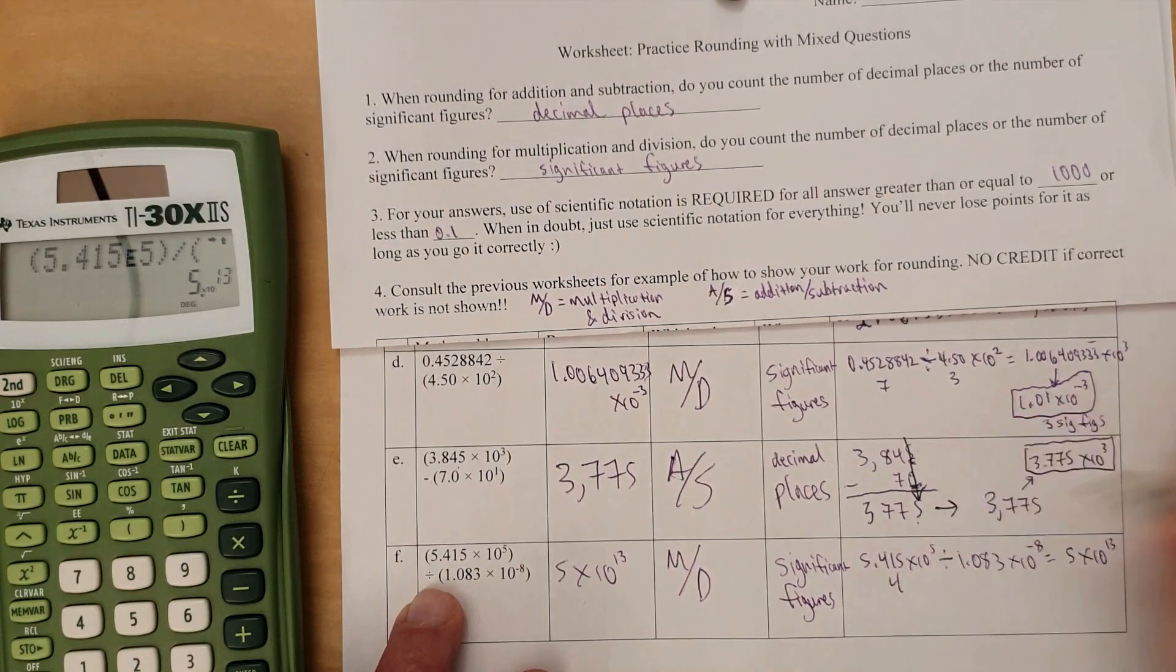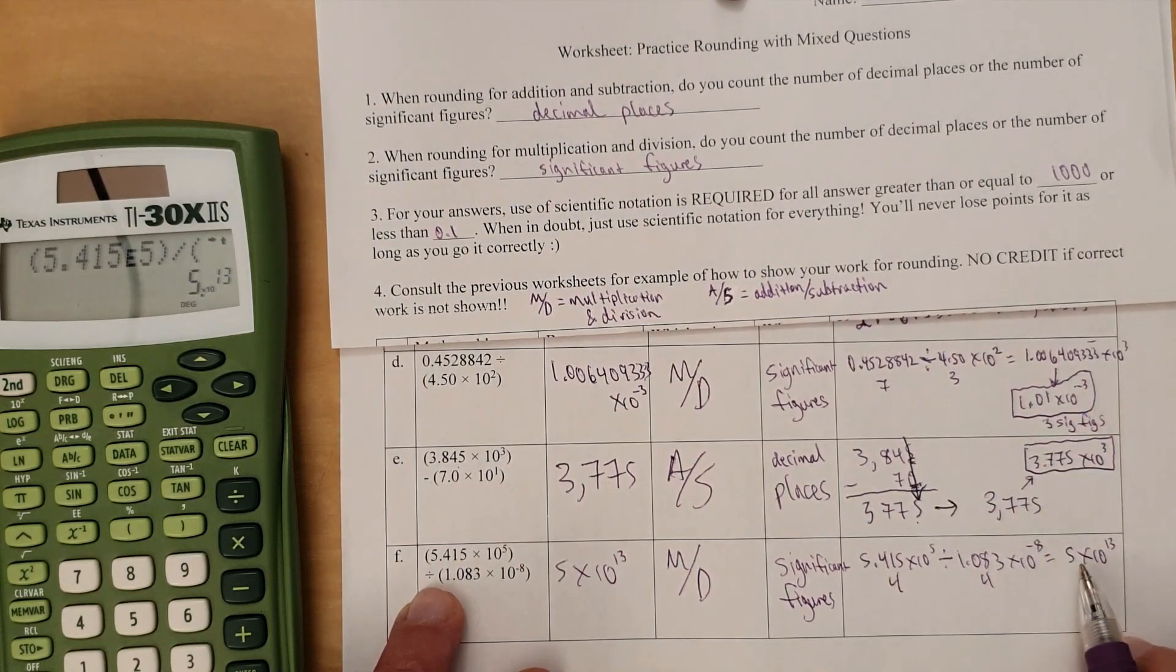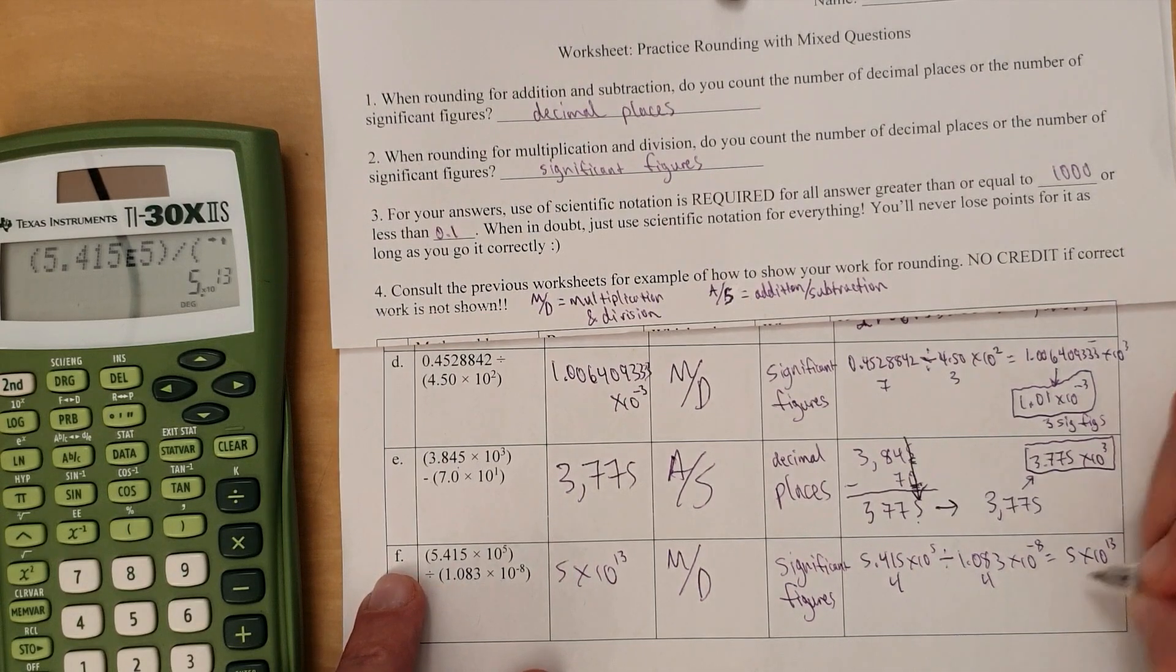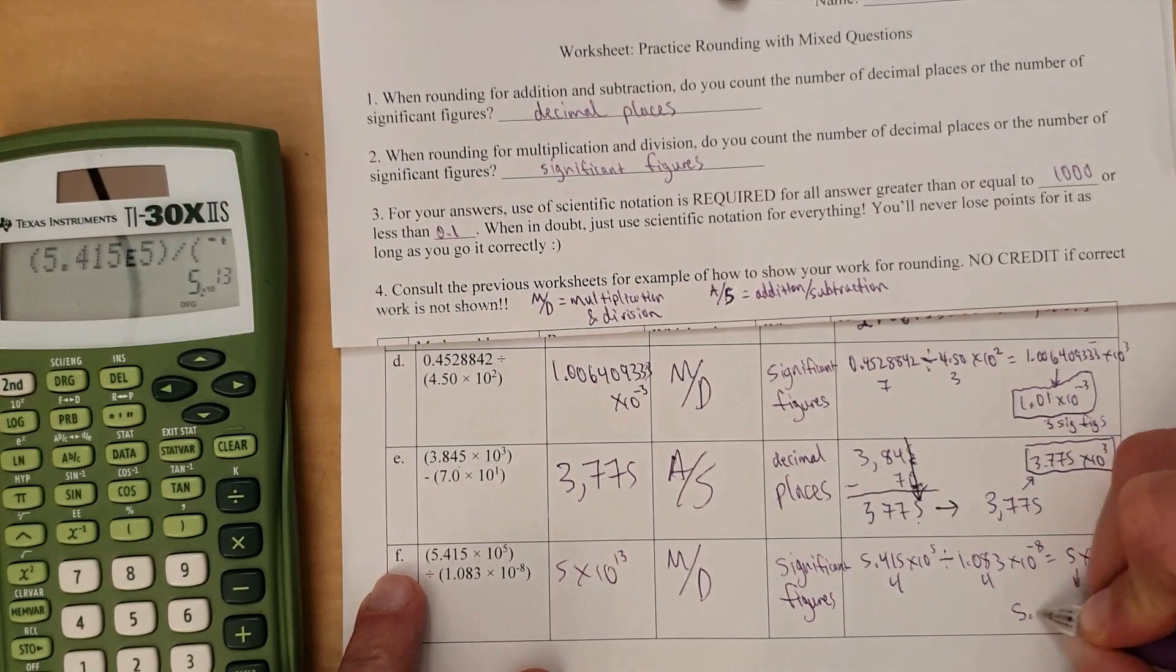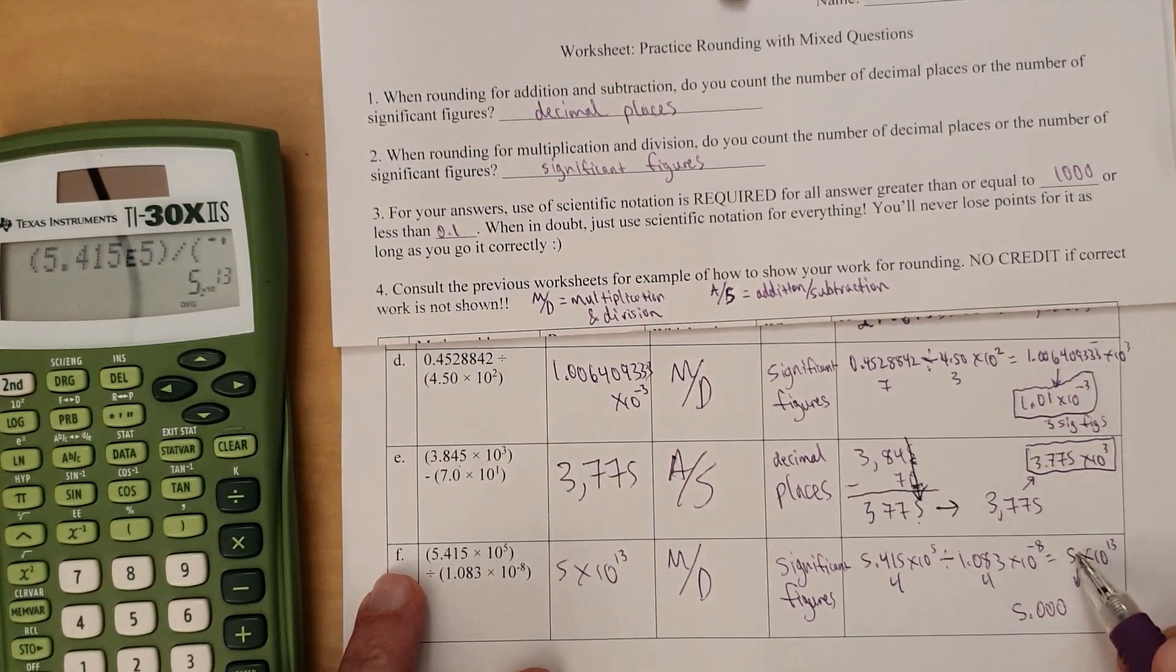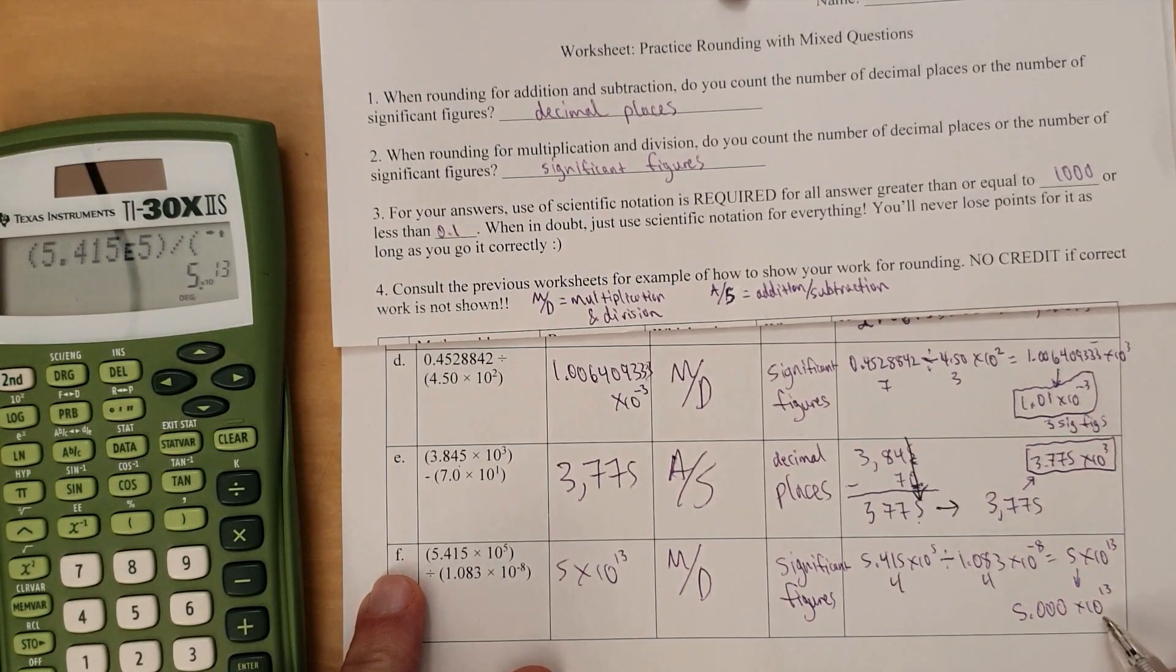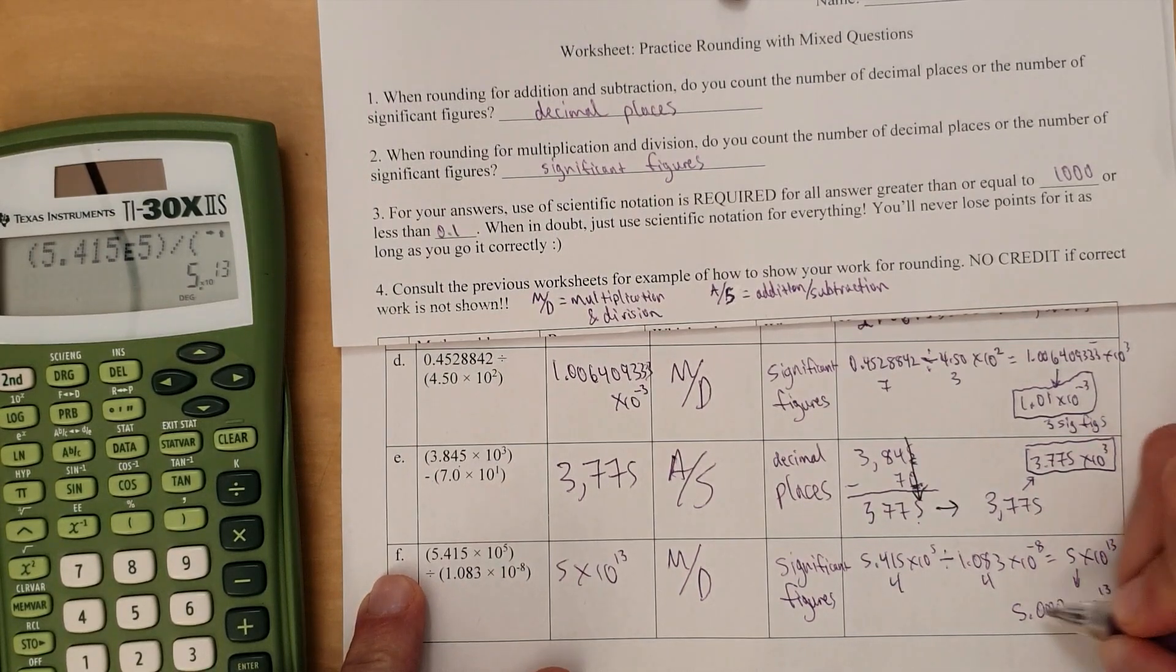Now, this is 4 significant figures. This is also 4 sig figs, so you better make this 4 significant figures. How do you make this 4 sig figs when it's just 1? Easy. 5.000. Now, you just turn 5 into 4 sig figs. Times 10 to the 13th, of course. Never forget to include the power of 10. Now, it's 4 sig figs. Times 10 to the 13th. The way it should be.